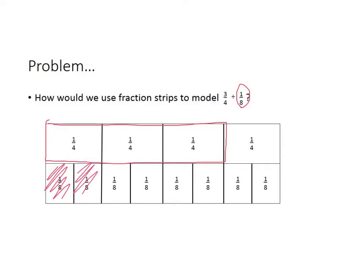If you look, there's 1, 2, 3, 4, 5, 6. So if we were to take 3 fourths and divide it into groups of 1 eighth, we would get 6. There are 6 groups of 1 eighth inside the section of 3 fourths.